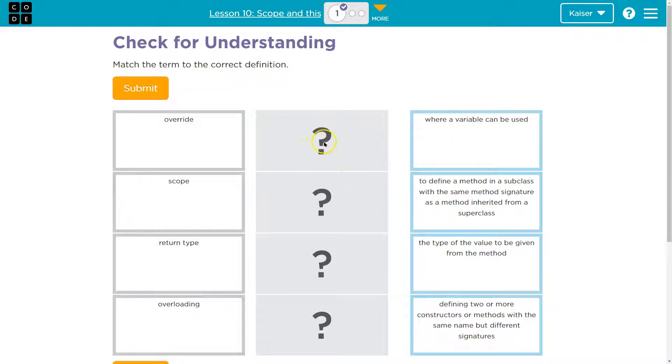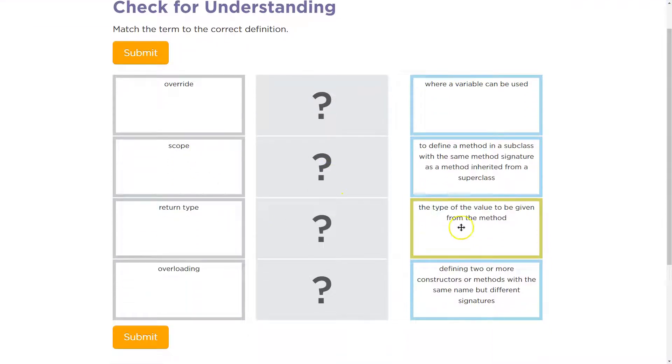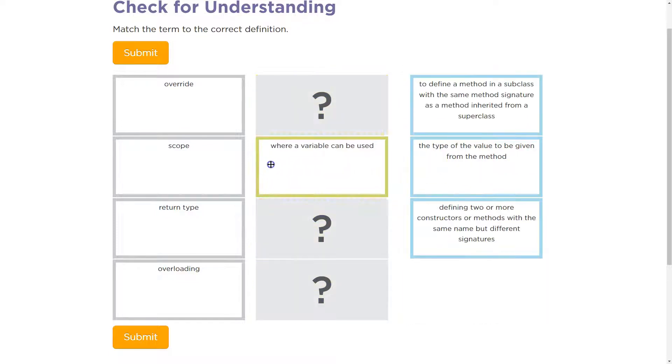If you have a variable at the top of your class, that variable could be used throughout the thing. But if you declare a variable inside of a method, you can't use it everywhere - it's local. So scope: where a variable can be used.